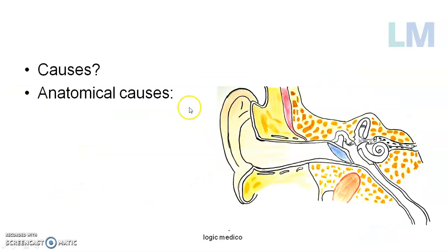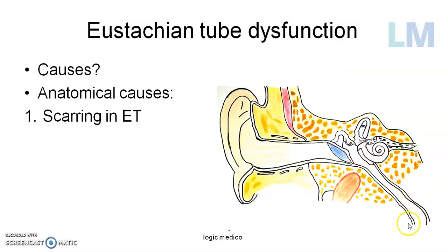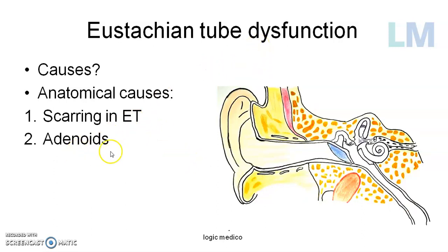What are the causes of eustachian tube dysfunction? First, anatomical causes: any problem — either a bony lesion or soft tissue lesion in the petrous part of the temporal bone or in the nasopharynx — can result in blockage of the eustachian tube. Any surgical procedure involving the nasopharynx, such as removal of polyps, adenoids, or nasopharyngeal carcinoma, can damage the elastic cartilage of the eustachian tube, resulting in scarring. When scarring occurs, the tube becomes narrowed and cannot open normally, thereby causing eustachian tube dysfunction.